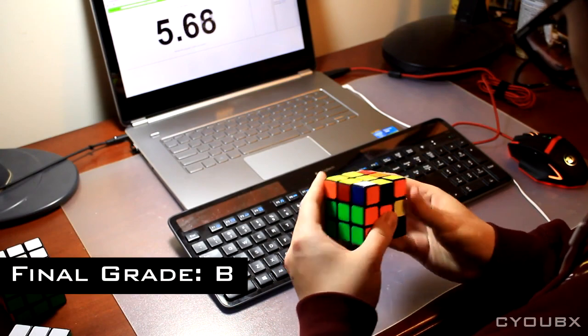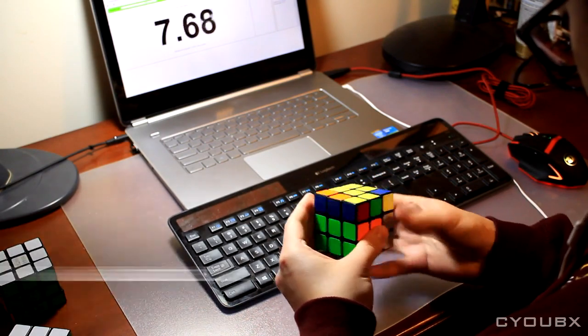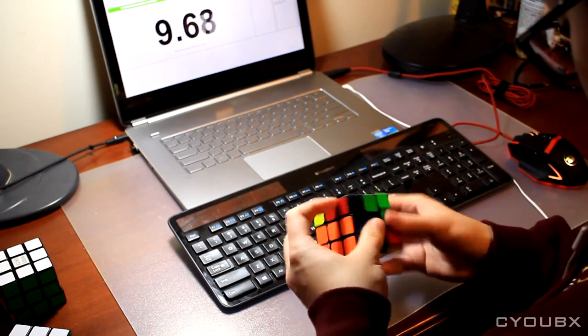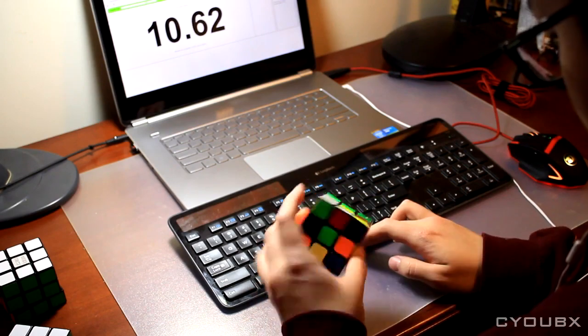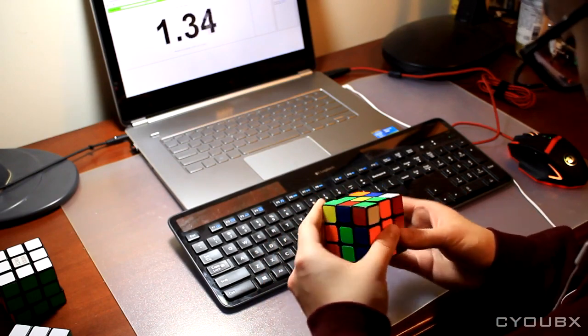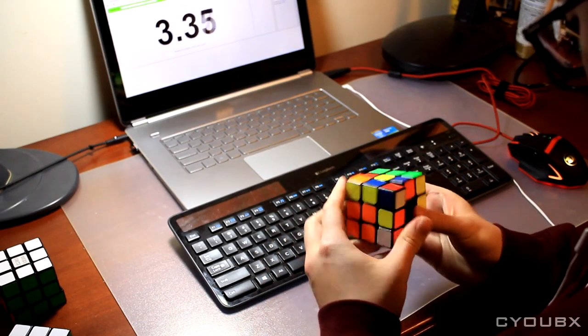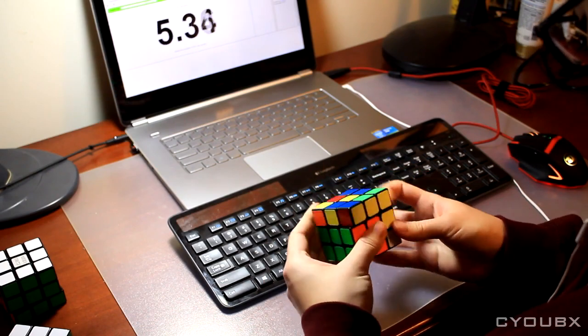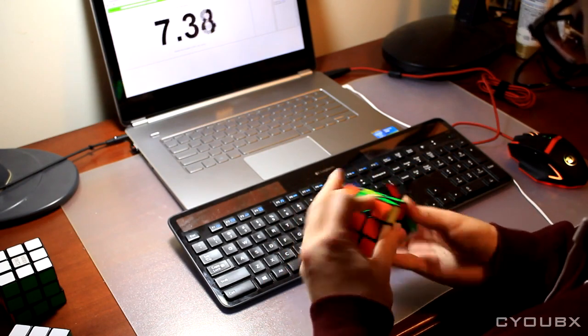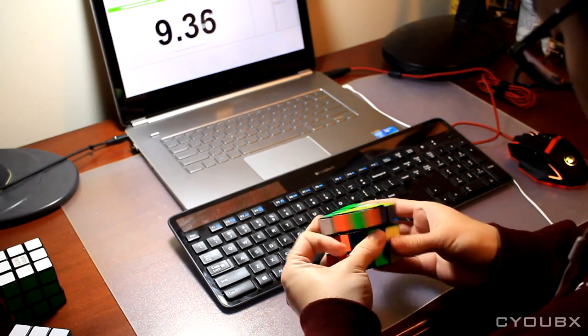You may have noticed that a common grade I give Cubes is a B+. That's because although Cubes have gotten better, they haven't made huge impacts or improvements like the Gu Hong did in its time. The improvements since this cube came out have been marginal, and realistically, Cubes that have received A's from me haven't been all that better than this cube, from 2010.